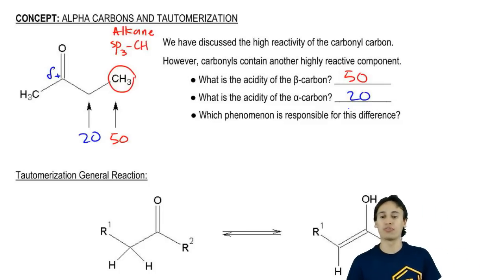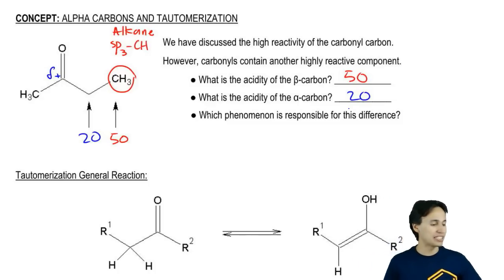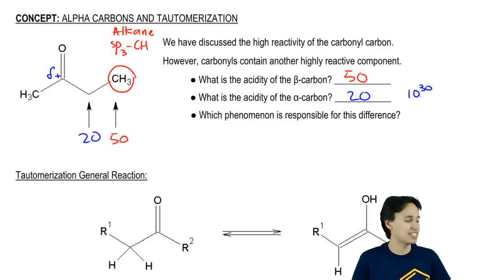What is responsible for this crazy difference? Just so you guys know, this is on a log scale. That means that it's 10 to the 30 times more acidic than an alkane. That's an indescribable number. That's a huge, huge number. What could possibly be responsible for this difference?